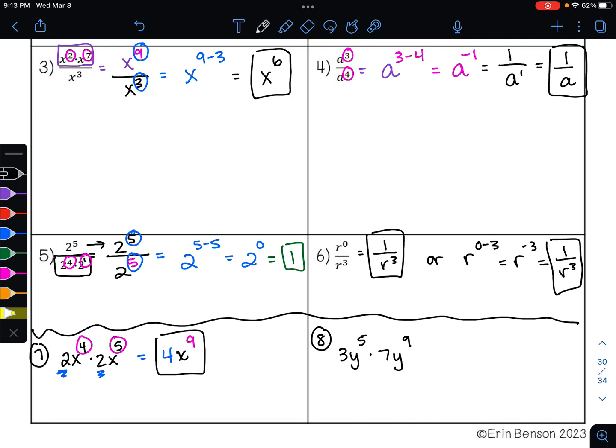On example 8, we are going to begin by multiplying our coefficients. 3 times 7 is 21. We are going to keep our base of y, and we are going to add our exponents. 5 plus 9 is 14. So here our answer is 21y to the 14th power.